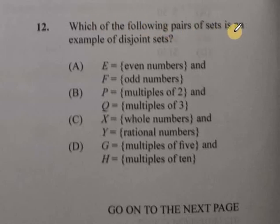Which of the following pairs of sets is an example of disjoint sets? Well, disjoint sets are sets with no common members.